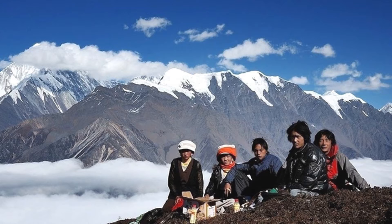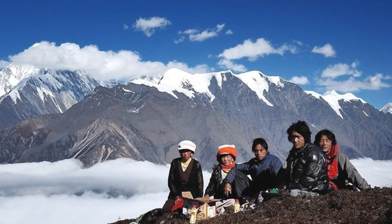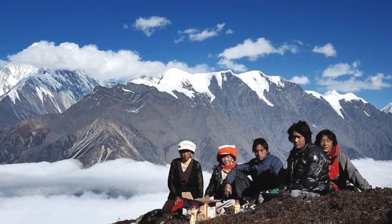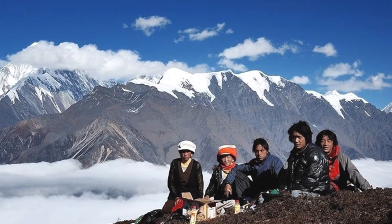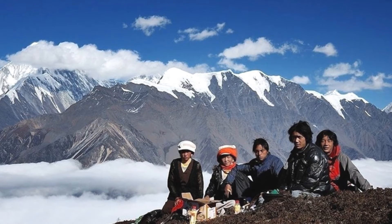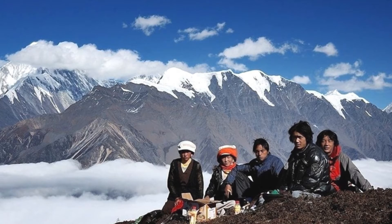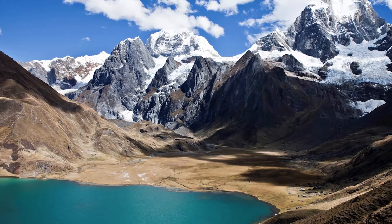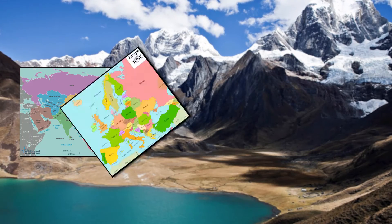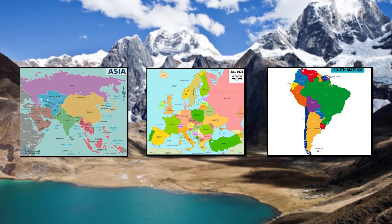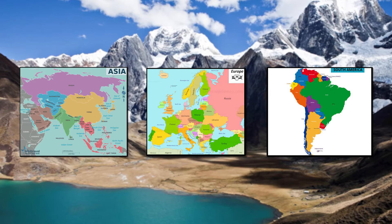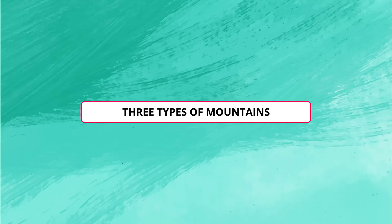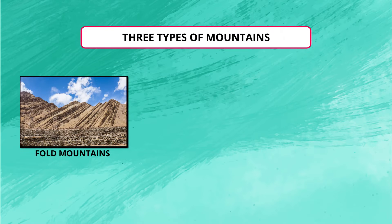Because of harsh climate, less people live in the mountain areas. Since the slopes are steep, less land is available for farming. Mountains may be arranged in a line known as a range. Many mountain systems consist of a series of parallel ranges extending over hundreds of kilometers. The Himalayas, the Alps, and the Andes are mountain ranges of Asia, Europe, and South America respectively.